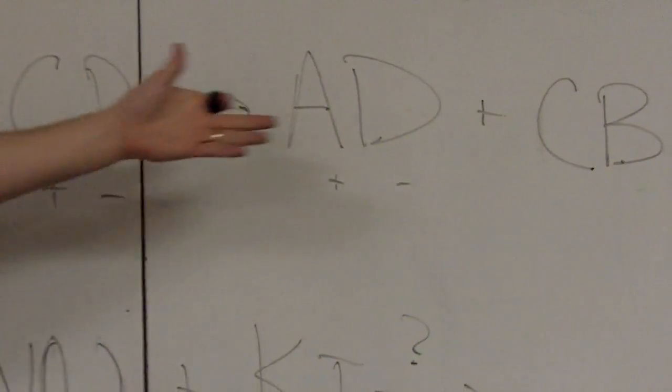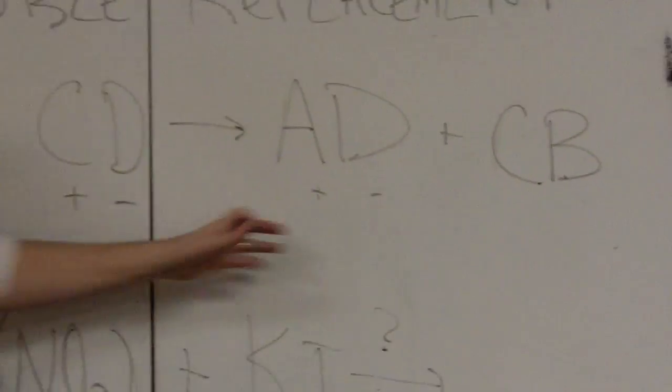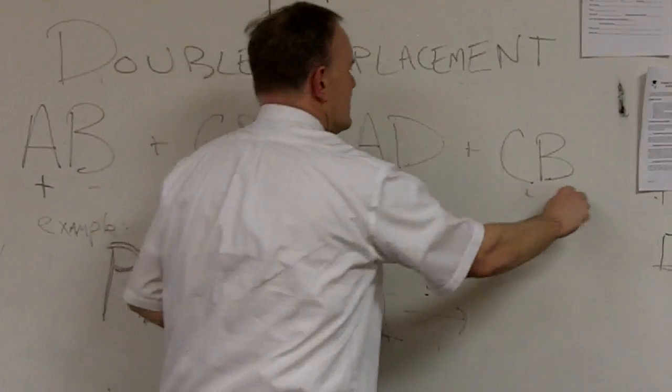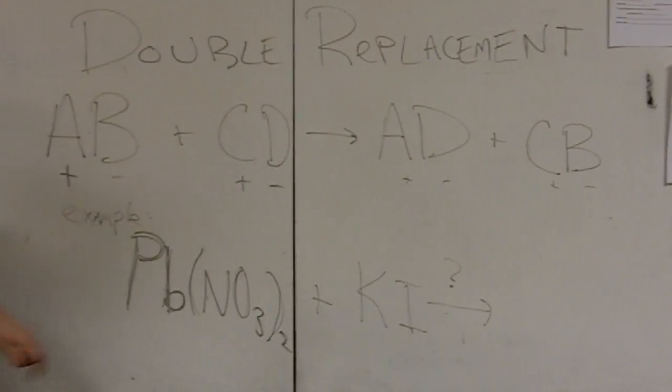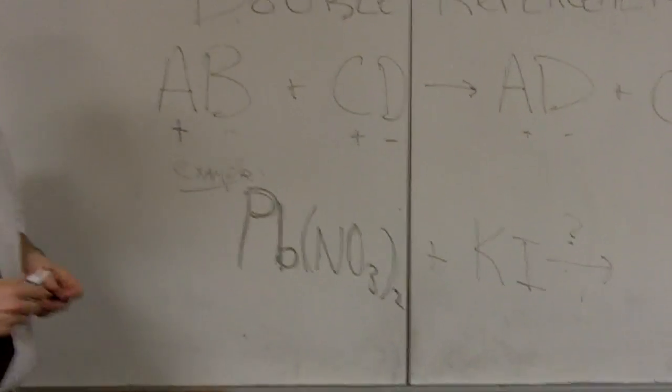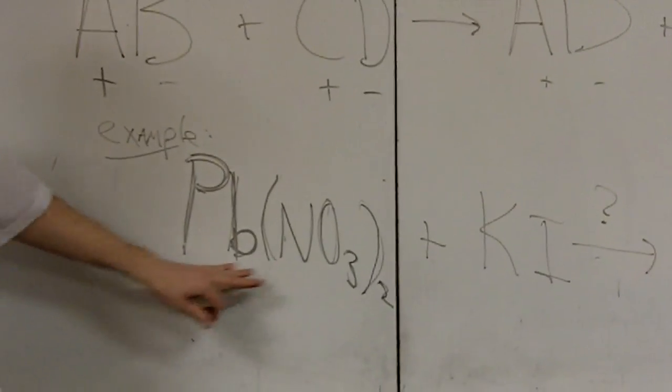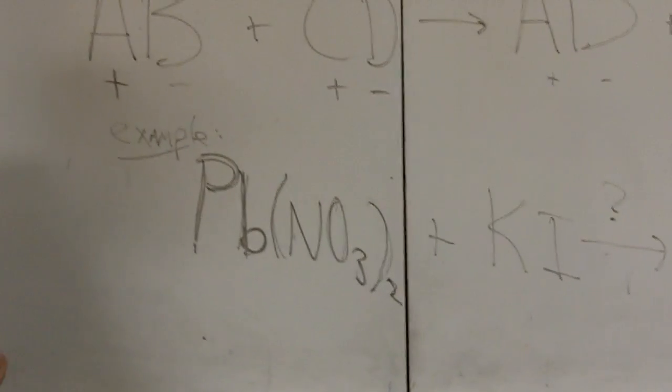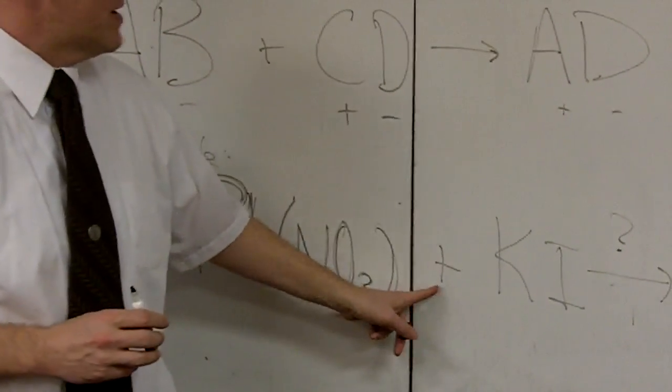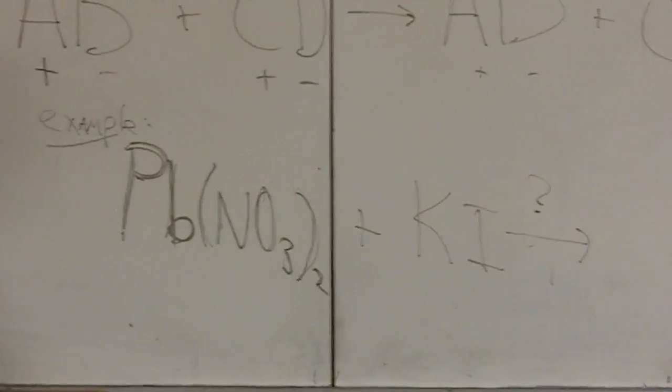So similarly, when the other product is made, you have the C has to go with the B, so it's a little switcheroo, positive first, and then negative. And so here we have an example reaction, lead nitrate. Those are our partners. Lead starts out with nitrate, and you mix it with some potassium iodide, where you're going to have a swapping of partners.